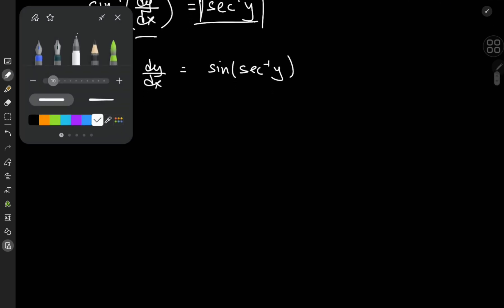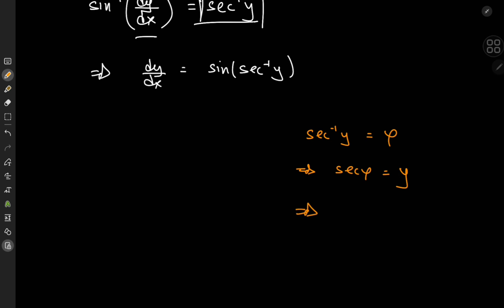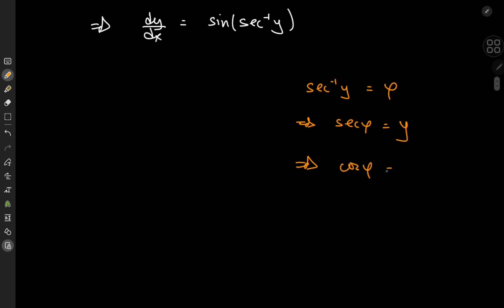And we can use some trigonometry here to express that quite nicely. We're going to call the inverse secant of y some angle phi. And this means that the secant of phi is y. And now that we have the secant, that means we have the cosine as well. So cosine phi is 1 by y.